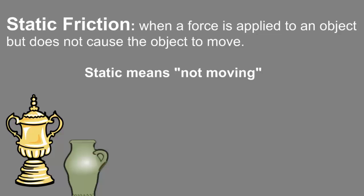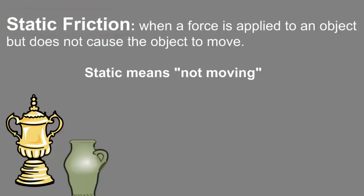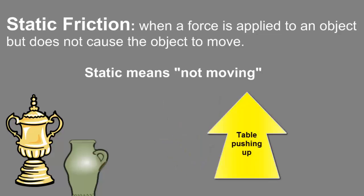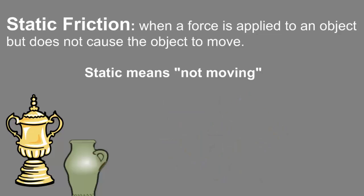The other main category of friction is static friction. This is when a force is applied to an object but it does not cause that object to move. Static means not moving. The object does not move because the force of static friction balances the force applied. With these pictures of trophies and vases, gravity is pulling them down, but the table is pushing back up, and those forces are equal. The friction of the table is actually keeping that trophy or vase in place.